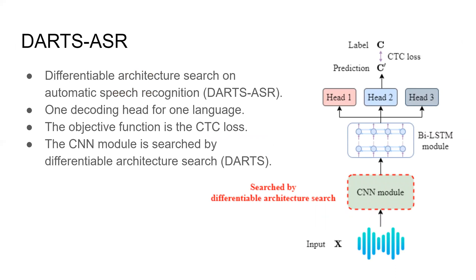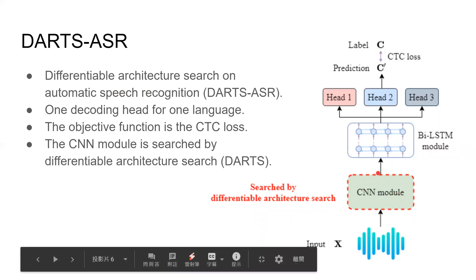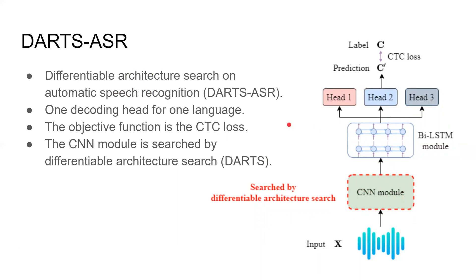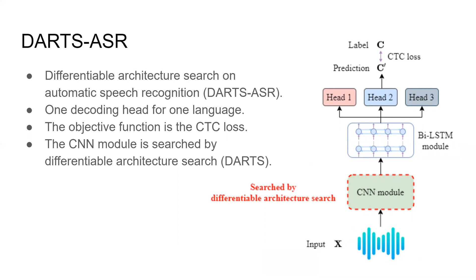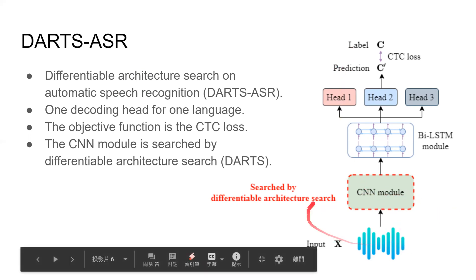So in this paper, we propose DARTS-ASR, Differentiable Architecture Search on Automatic Speech Recognition. It consists of a CNN module, a Bi-LSTM module, and several decoding heads. The input X is a segment of acoustic features such as mel filter banks. And for each different language, a specific head is used to output a transcription text sequence. The objective function is the CTC loss computed with our predictions and labels. And we use Differentiable Architecture Search on the CNN module to find a good CNN architecture.